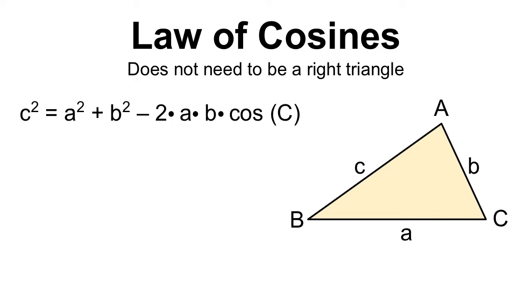One of the things that you might notice is that the very beginning of the equation looks a lot like the Pythagorean theorem. C squared equals A squared plus B squared - that is the same thing as the Pythagorean theorem.